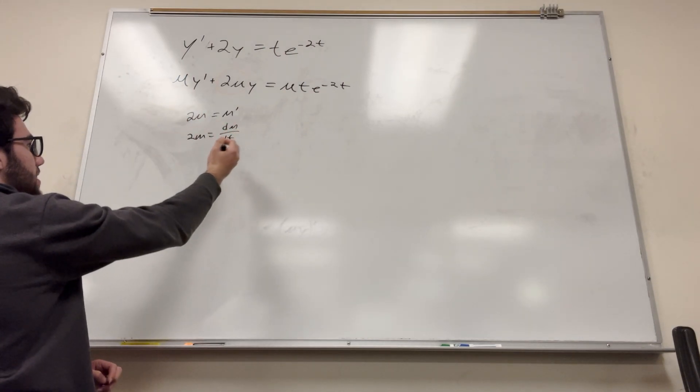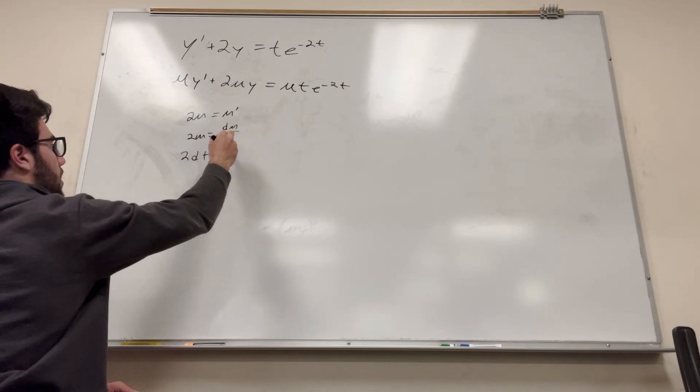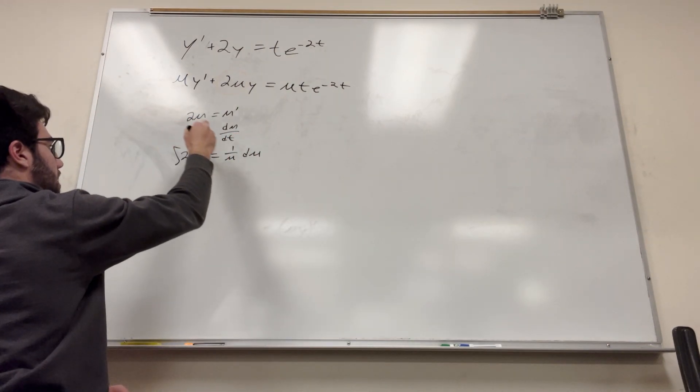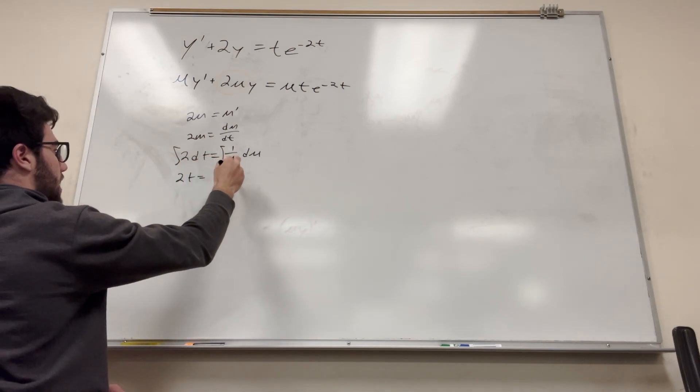And then we're going to want to divide by mu. So it'll be 2 dt is equal to 1 over mu d mu. Then we're going to integrate both sides, and we'll get 2t is equal to ln absolute value of mu.